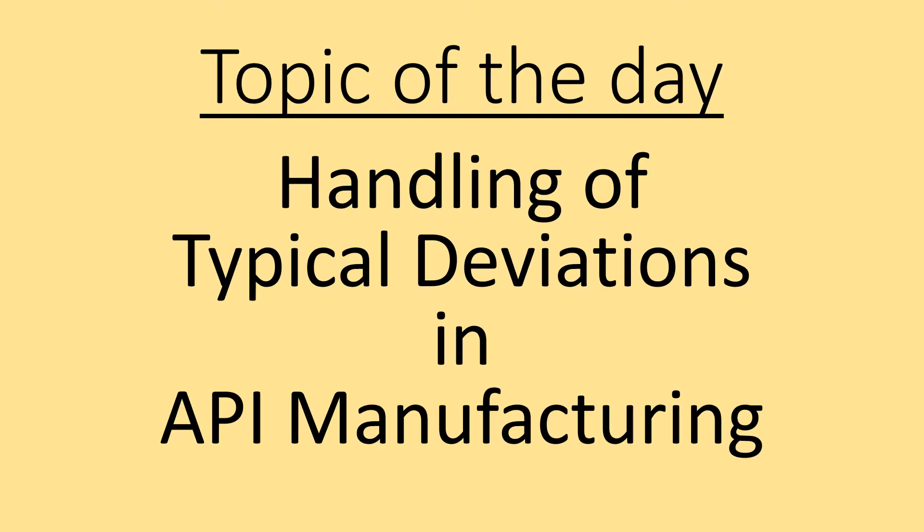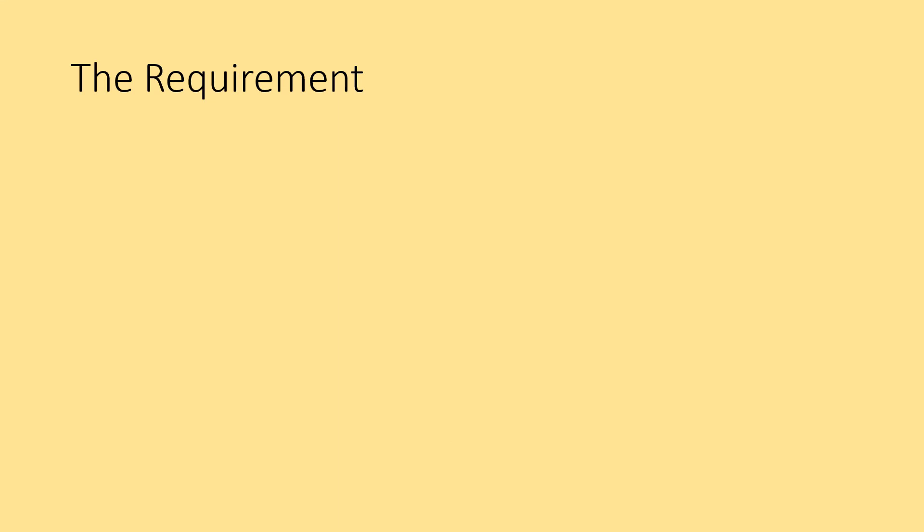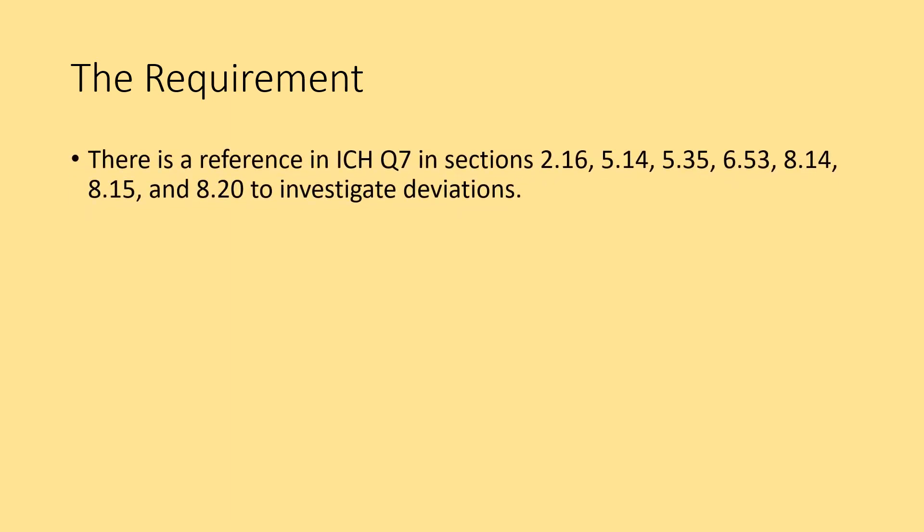Today's topic is handling of typical deviations in API manufacturing. The ICH Q7 recommends in several sections to initiate a deviation investigation to find out the root cause of the deviation. There is a reference in ICH Q7 in sections 2.16, 5.14, 5.35, 6.53, 8.14, 8.15, and 8.20 to investigate the deviations for the reasons for failure.